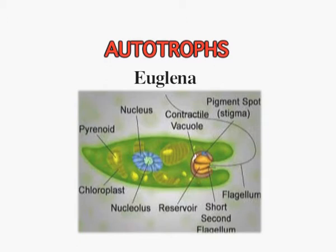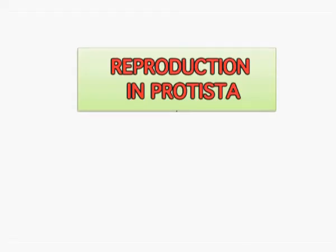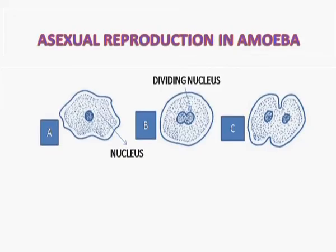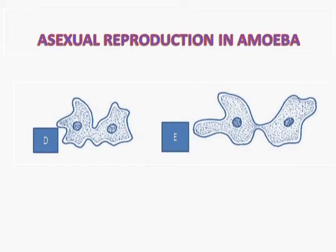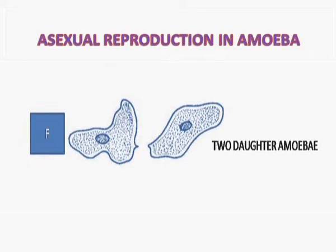Leishmania causes kala-azar, whereas Trypanosoma causes sleeping sickness in human beings. They can be autotrophs — for example, Euglena, which manufactures its own food with the help of chlorophyll. They can also be saprophytic or heterotrophic. Just like Monerans, reproduction is either sexual or asexual. Asexual reproduction takes place by binary fission, where the nucleus divides first followed by the cytoplasm. A furrow appears in the middle, which deepens, and ultimately two Amoebae are formed.